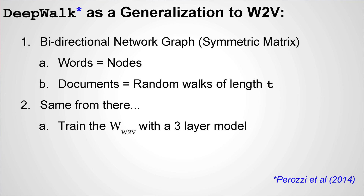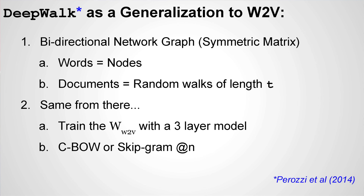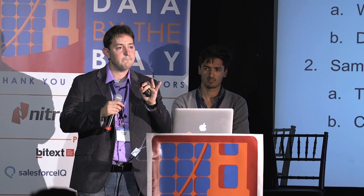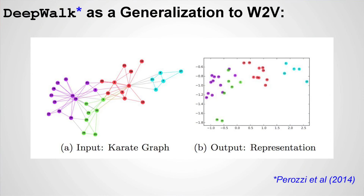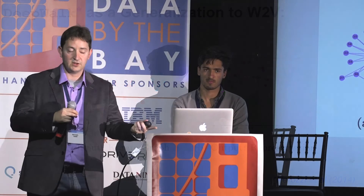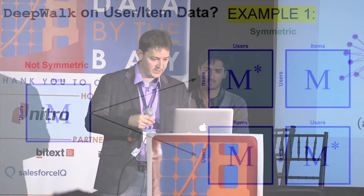Everything is then the same — you still run it through the Word2Vec three-layer shallow neural net, doing continuous bag-of-words, skip-gram, or modifications as appropriate. What you end up with is an embedding of the graph structure in a much lower-dimensional representation. You input a sparse graph and get a mapping of the nodes in that graph into, say, a two-dimensional space in a toy example.